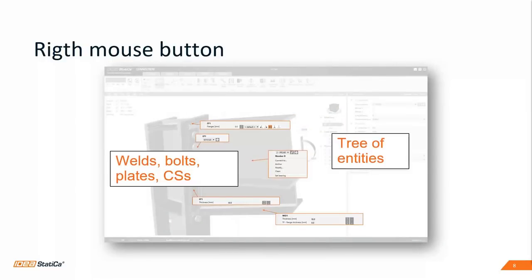You can also use the right mouse button — settings are available in the 3D window under right mouse button. This means we can do a lot of things with just the mouse, so you can really speed up your process of modeling. Now we can show you how to use all of these new features.